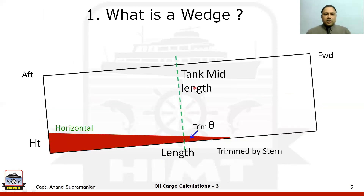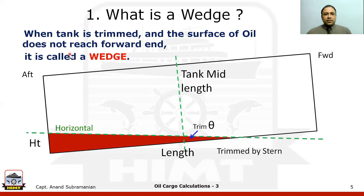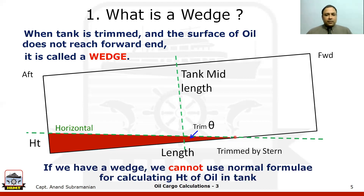When the oil surface comes down towards or after completion of discharge, we have an issue because the oil surface no longer touches the forward bulkhead. It is forming a triangular section at the bottom of the tank. The oil surface starts from the aft bulkhead but does not reach the forward bulkhead. In such cases we have a wedge. When a tank is trimmed and the surface of the oil does not reach the forward end, it is called a wedge. If we have a wedge, we cannot use the normal formula because the horizontal surface is pivoting around some arbitrary point, and that is why we have to refer to wedge calculations.